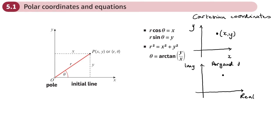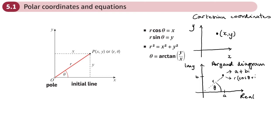The Argand diagram is another 2D plane, and we can describe a point on it either as a complex number — say a + bi — or using the modulus and the argument. If the modulus is r and the argument is theta, you can use the modulus-argument form: r cosθ + i sinθ.